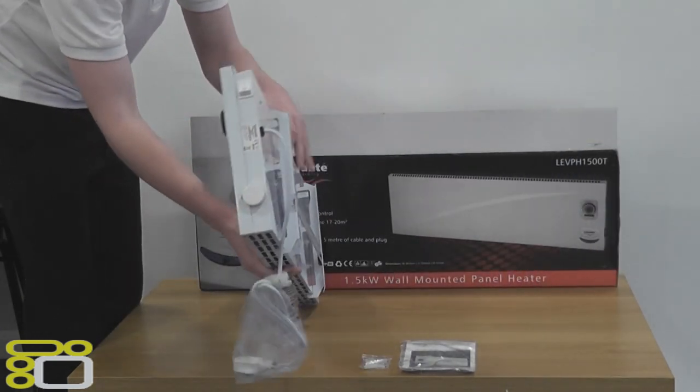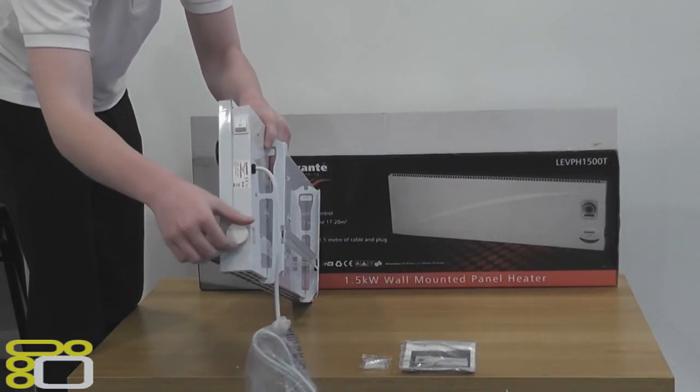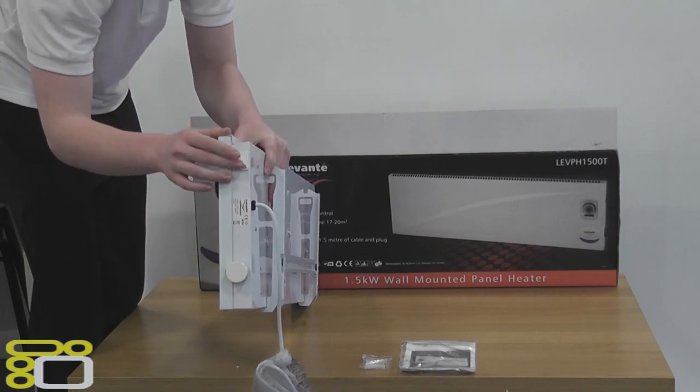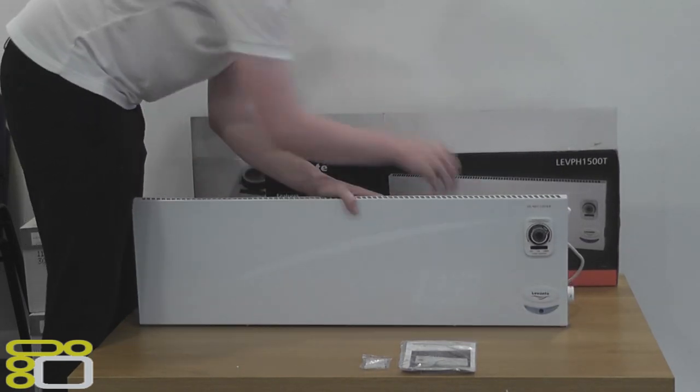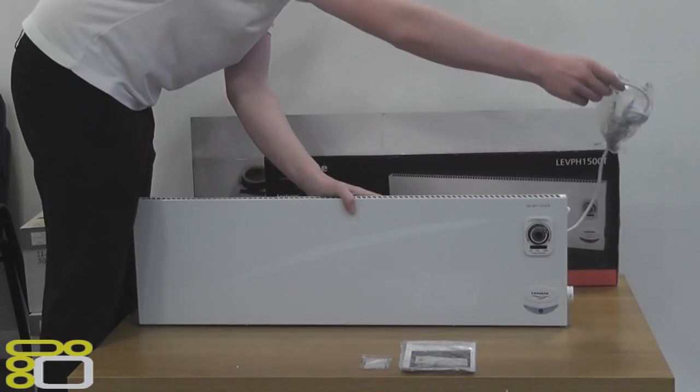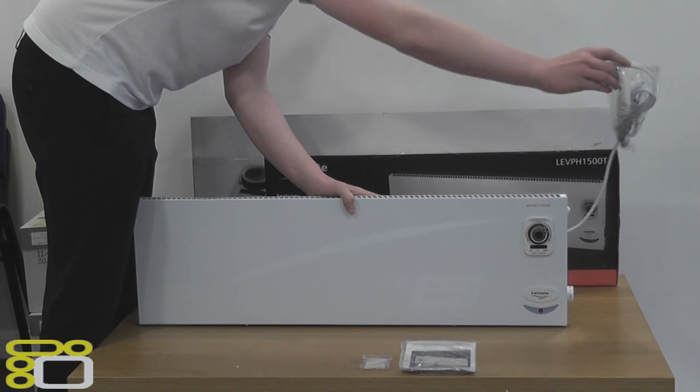On the side of the heater is the on and off switch and the thermostat. The pre-fitted cable is 1.5 meters long and comes out from the right of the heater.